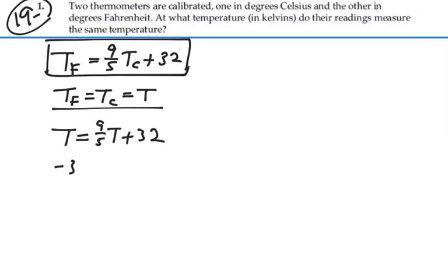So we have negative 32 is equal to nine-fifths T minus five-fifths T, which would be four-fifths T.